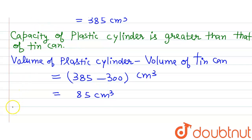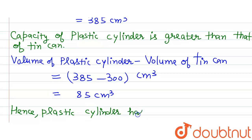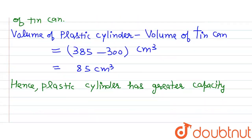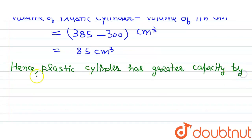Hence the plastic cylinder has greater capacity, and the greater capacity is by 85 cm³. This is our final answer. Thank you.